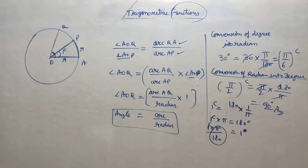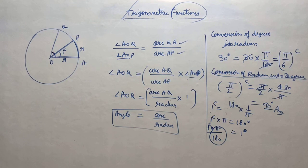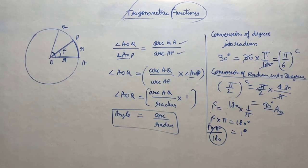Hopefully you understood this particular concept. Now in the next video, students, we will take some examples where we will do some exercises — conversions of different types of radian angles to degrees and degrees to radians. Get ready for those examples. I hope this particular concept related to measurement of angles is clear. Thank you so much for watching this video.